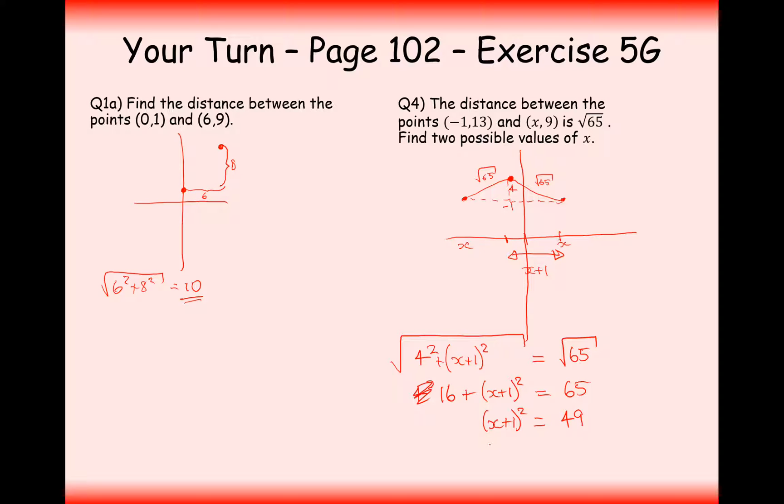And here, square rooting both sides now, I'm going to get x + 1 equals plus or minus 7. And taking away 1 onto both sides, I'm going to get two different cases here. So, I'm going to get x equals, when I take away 1 from 7, I'm going to get 6. And when I take away 1 from -7, I'm going to get x is -8.